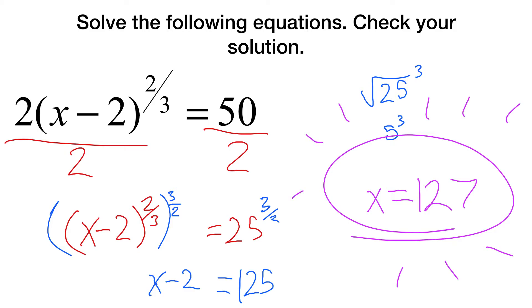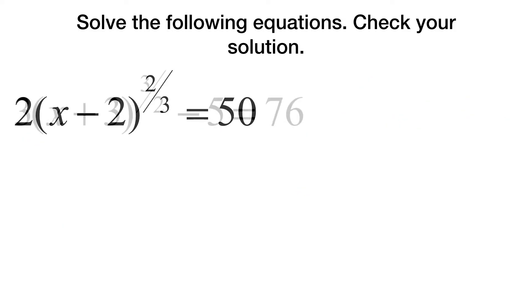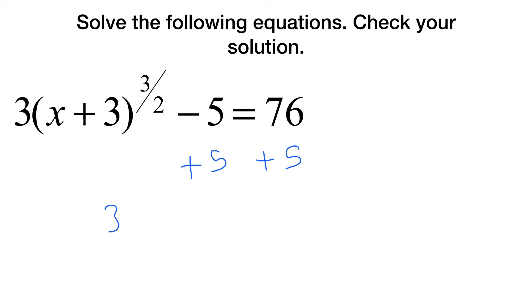Okay, so let's try this one. So our first step is going to be, like always, adding 5 to each side. That ends up getting us 3 times x plus 3 to the 3 halves equals, in this case, 81. At that point, we divide both sides by 3. x plus 3 to the 3 halves is 27.